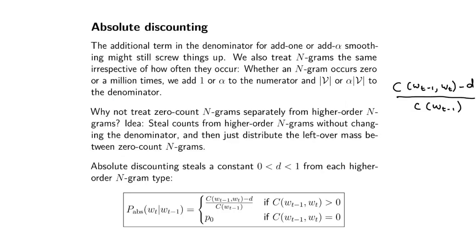One last thing about absolute discounting - you can do something more complicated. Here we've said if the count of a bigram is larger than zero, subtract D. If it's zero, use P0.